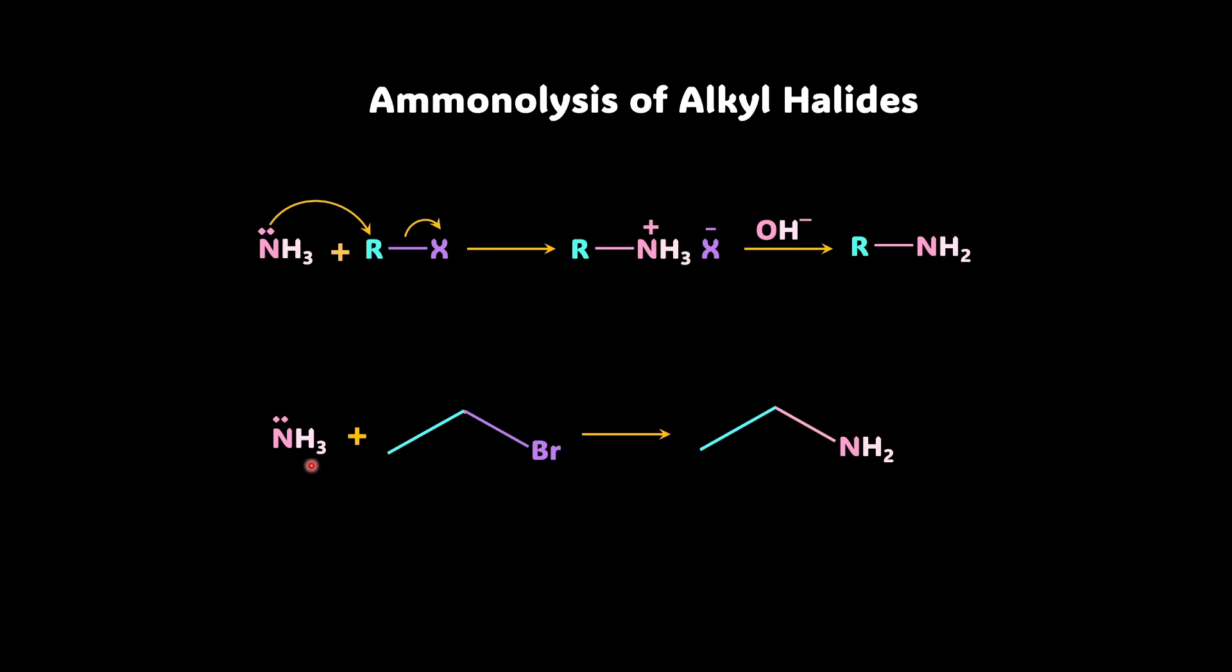Say you take ammonia with ethyl bromide, okay? So what do you get? You get ethyl amine, check. Now how is that happening? Let's understand it with a mechanism, okay?